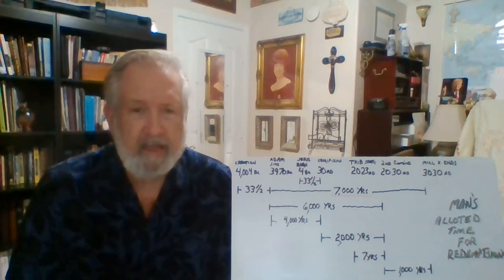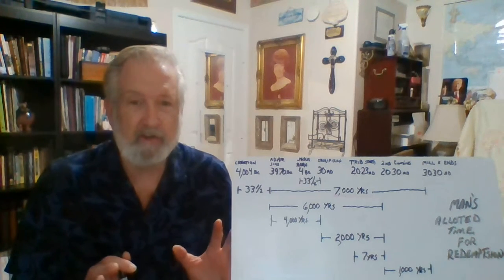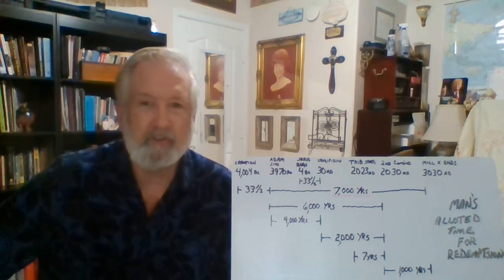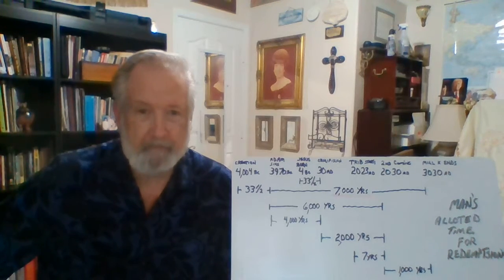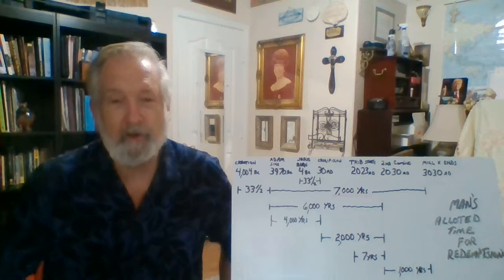But the date that we want to start with for this 7,000 years is not 4004 BC, but actually 3970 BC. Now that's 33 and a half years or 34 years difference from the creation date.